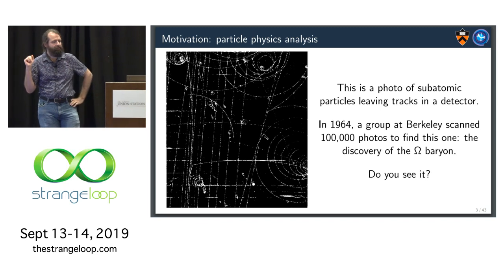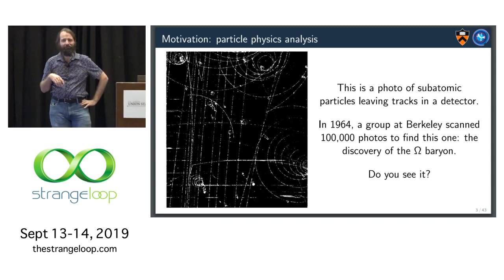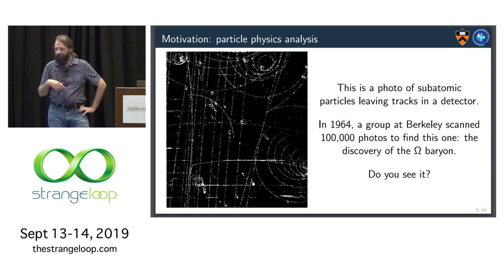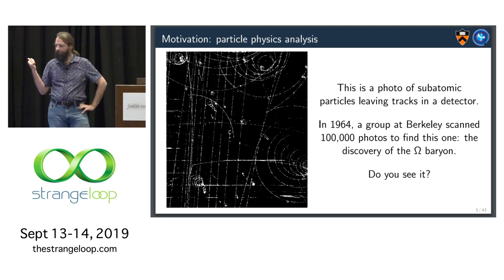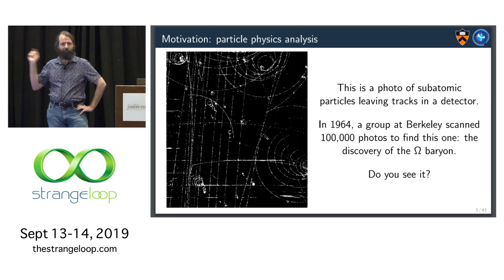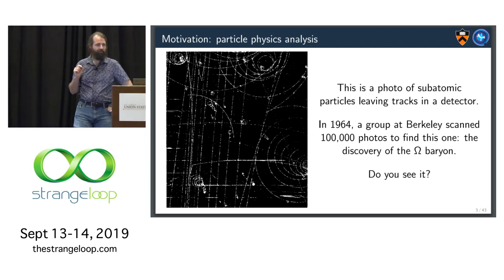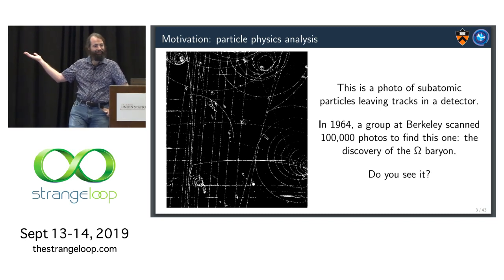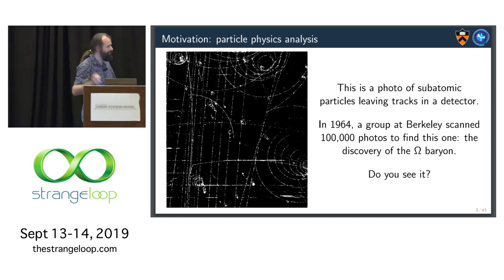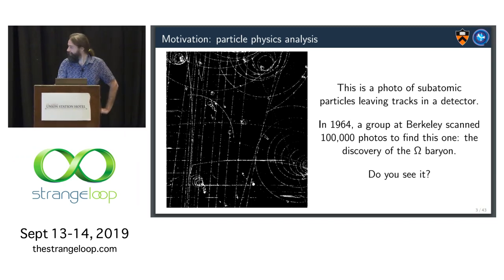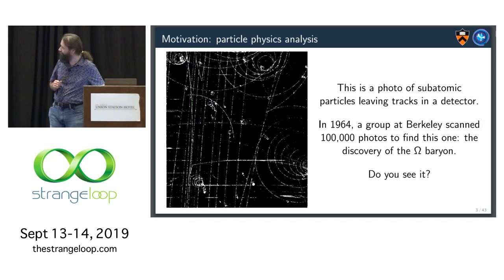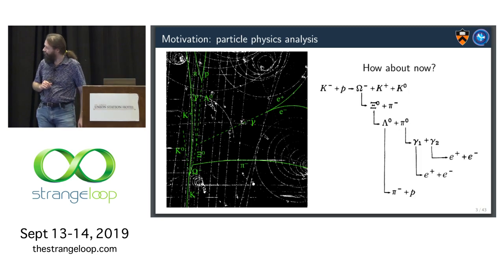And so you've probably seen pictures like this. Some people might have it as background near a laptop or a poster. It's a photo of some atomic particles traveling through a detector. And this one is from 1964. A group from Berkeley scanned through 100,000 photos to find this one. This one is special. It's the discovery of the Omega Baryon, which was a pivotal point in discovering quarks. So then, look at that, you see it? Go through 100,000 photos that look more or less like this in order to find it?